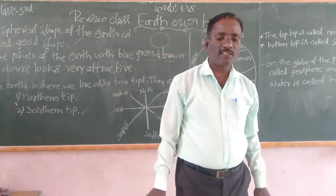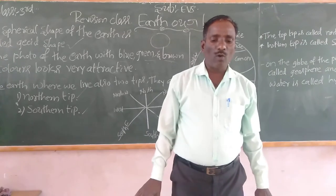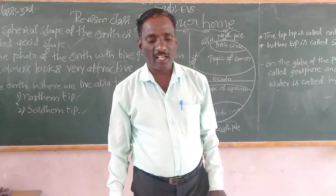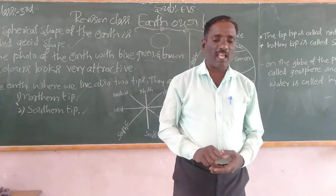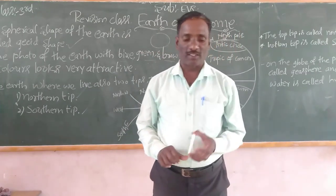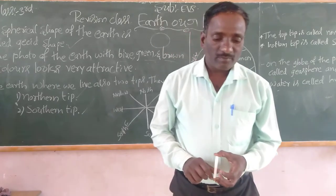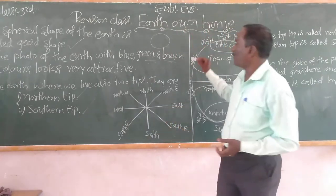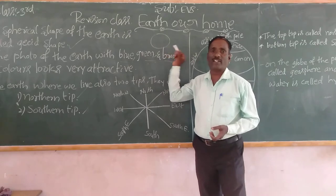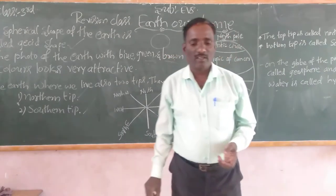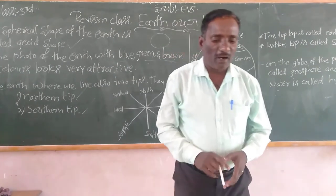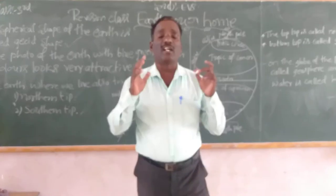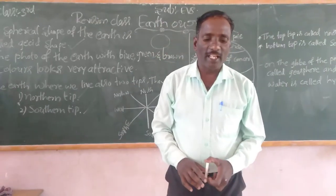Look at the pictures given below. Write the name in the space given with the help of the pictures. Observe the shape of the earth — the shape of the earth is called circle shape. Compare the shape of the sun and the moon with the shape of the earth. Is there any difference?